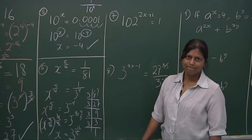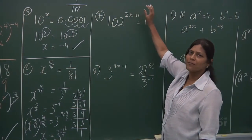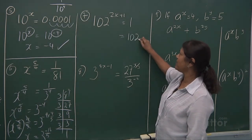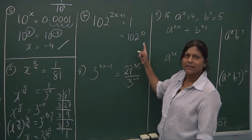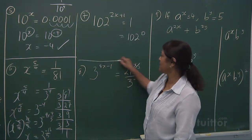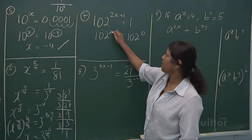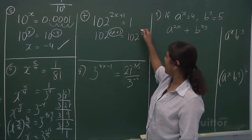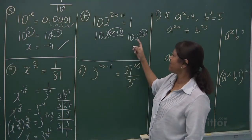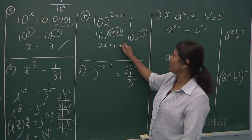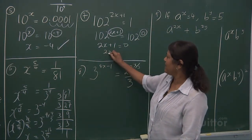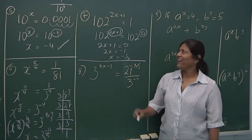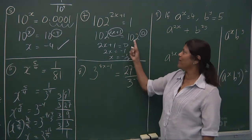Any number to the power of 0 will be 1. When you see a 1, it's the same as saying 2 to the power of 0. So 2 to the power of 0 equals 2 to the power of 2x plus 1 — they are both equal. That means the powers are both equal: 2x plus 1 is equal to 0. 2x is equal to minus 1, and x is minus a half.